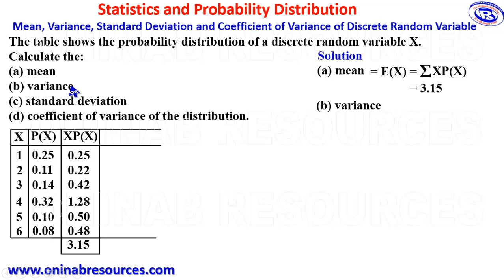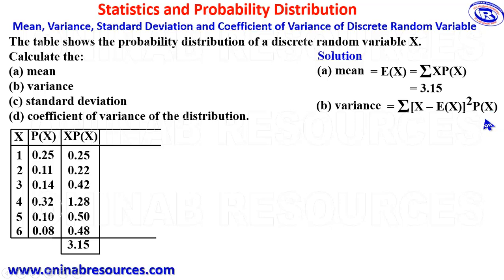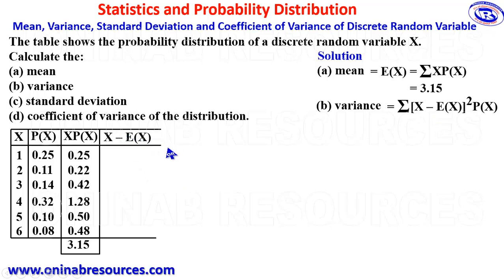The next thing is the variance. The formula for calculating the variance is given as sigma of (x minus mean) all squared, multiplied by p(x). So we are going to create a column for (x minus E(x)), also (x minus E(x)) squared, and finally (x minus E(x)) squared multiplied by p(x).